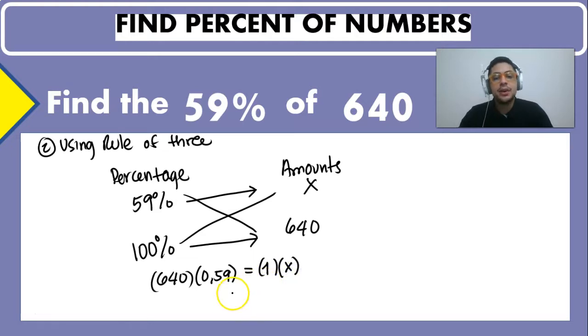That means that our answer is going to be 640 times 0.59 and that is going to be 377.6 which is going to be the value we are looking for which is the percentage of the number.